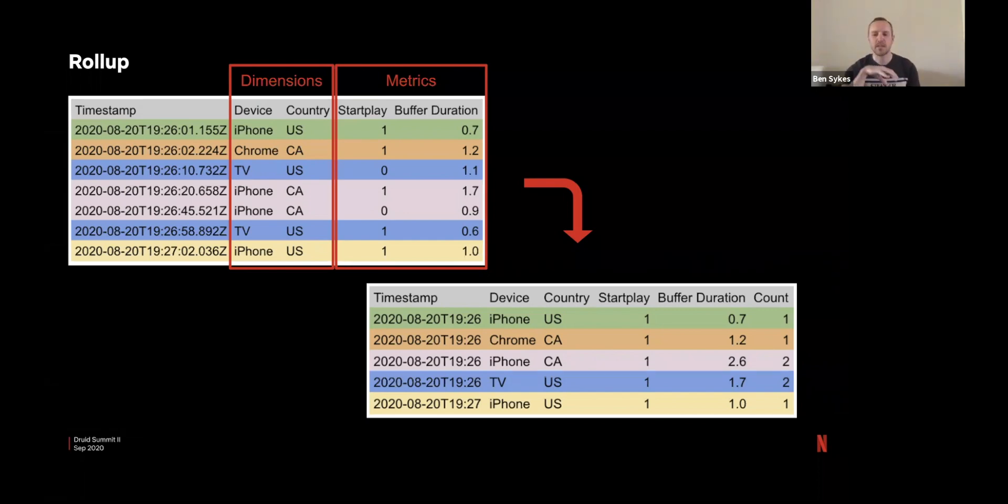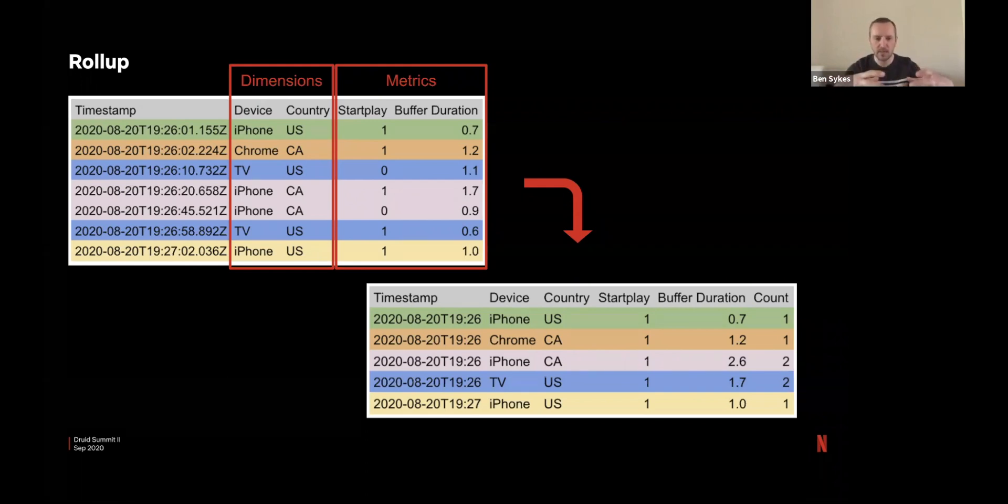In this contrived example here we have our dimensions and our metrics. We keep a query granularity of one minute which means that any two events arriving in the same minute with identical dimensions can be compressed into a single row.